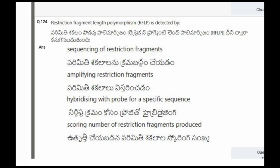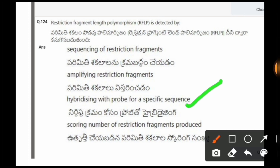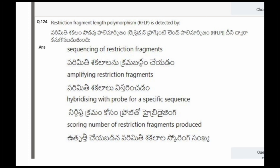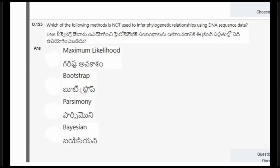Next question: Restriction fragment length polymorphism RFLP is detected by? The options are sequencing of restriction fragments, amplifying restriction fragments, hybridizing with probe for a specific sequence, scoring number of restriction fragments produced. The correct option is the third one, that is hybridizing with probe for a specific sequence.